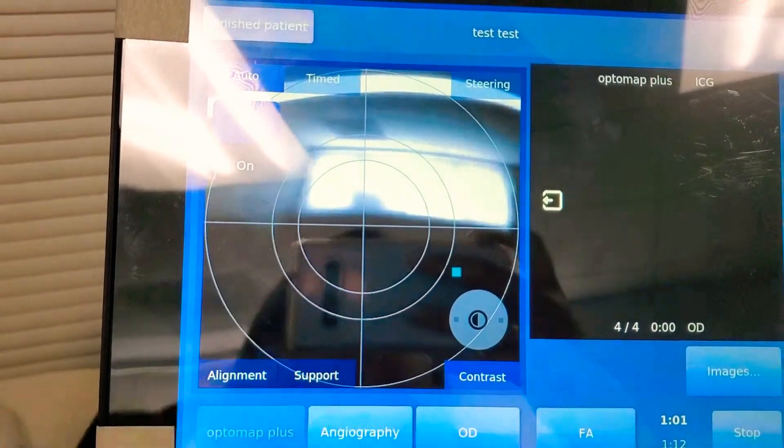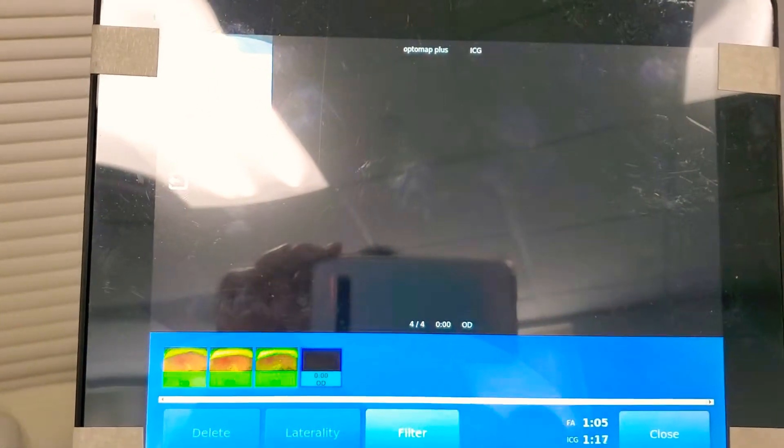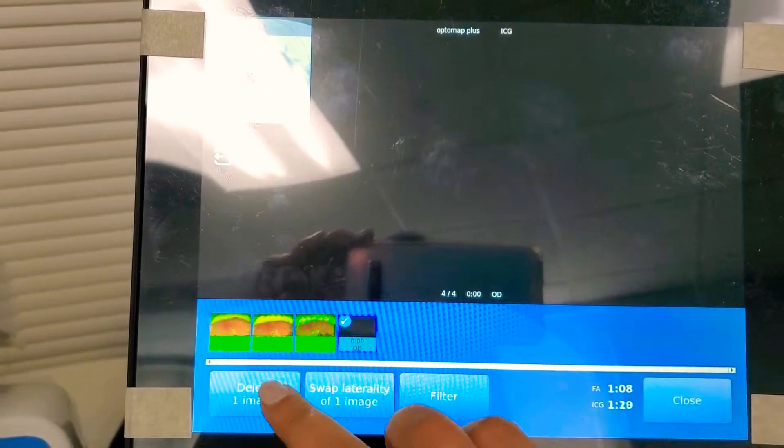Okay. And once we're done. Same thing. We go to images. View the images. We don't like this one. Double click. Delete image.